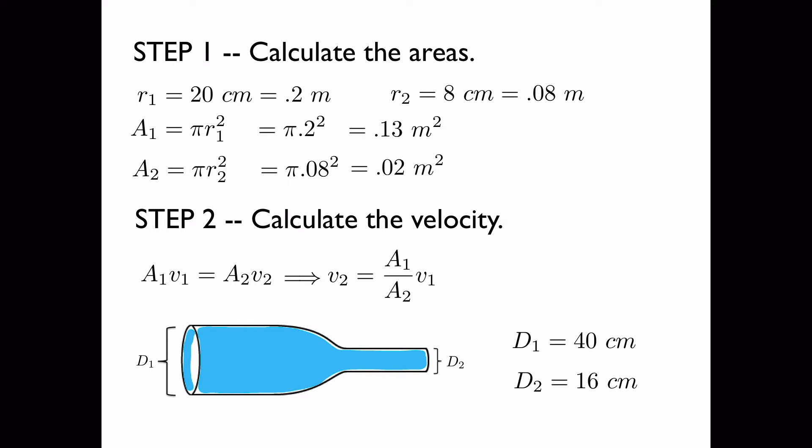We can rearrange to solve for the velocity in region 2. We take the ratio of the areas, and we get a velocity in region 2 of 26 meters per second.